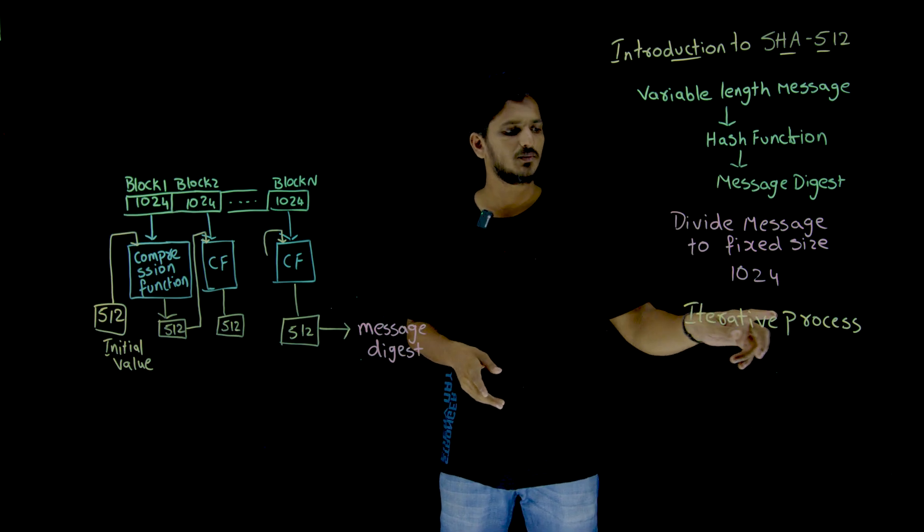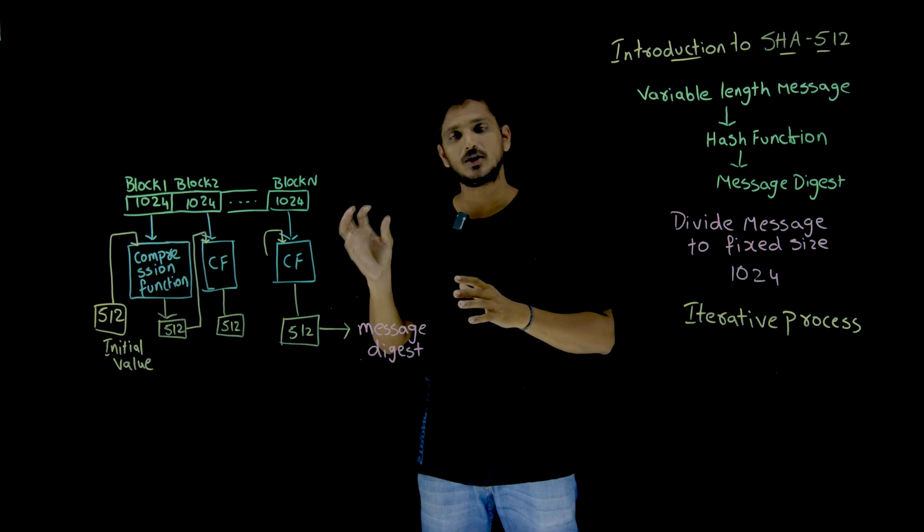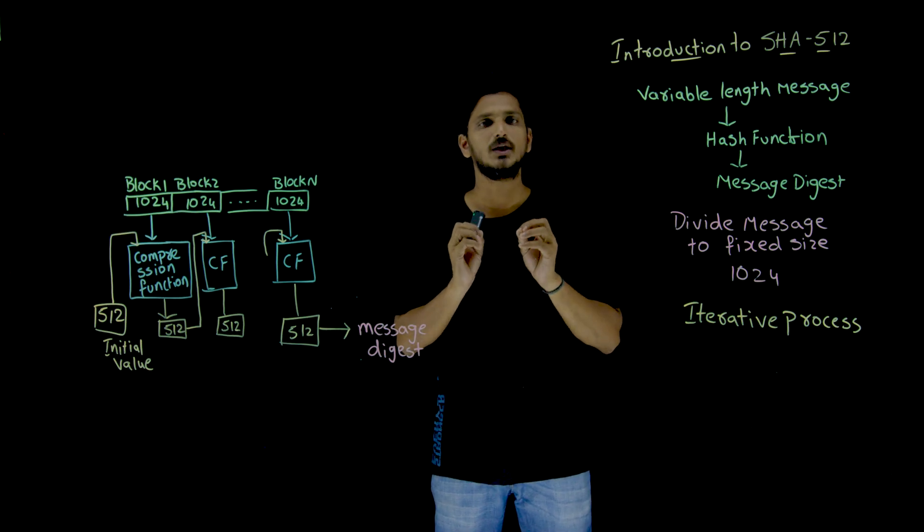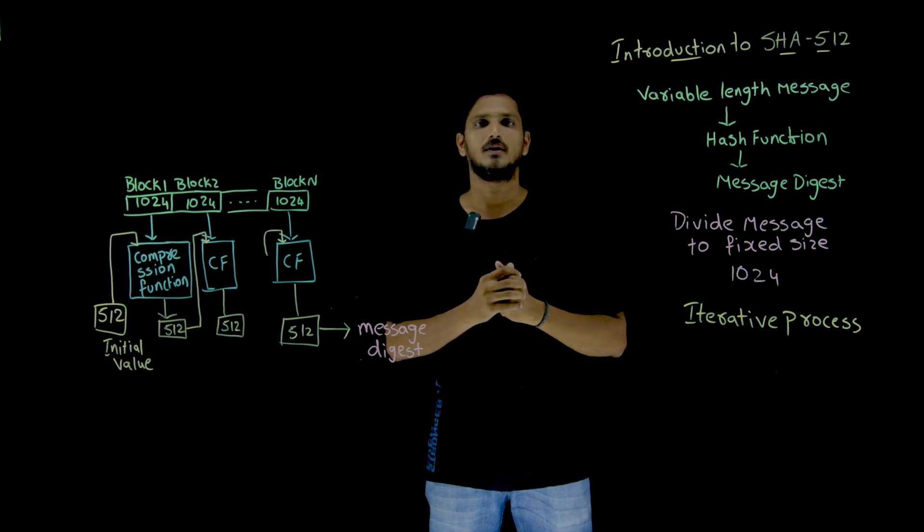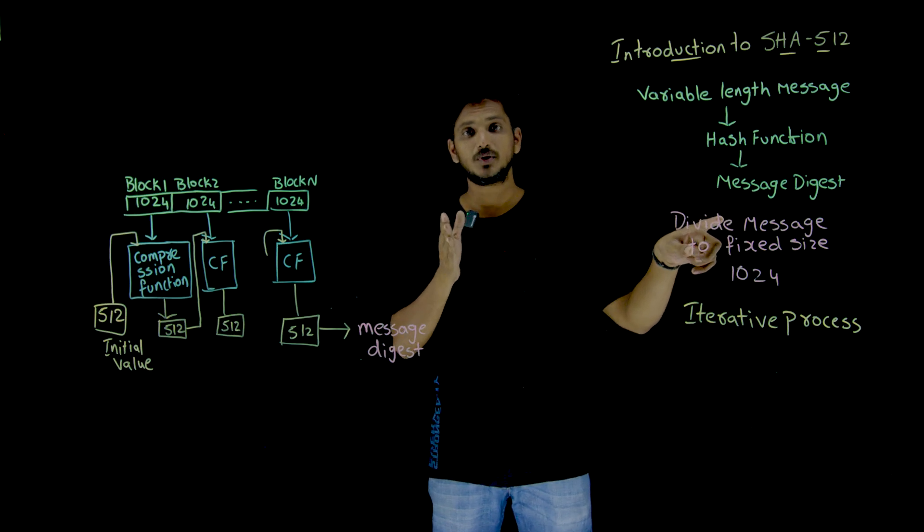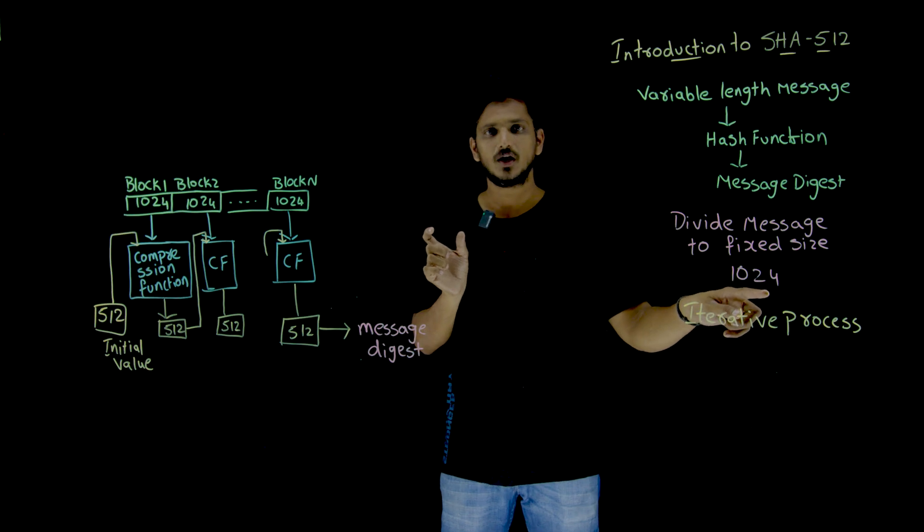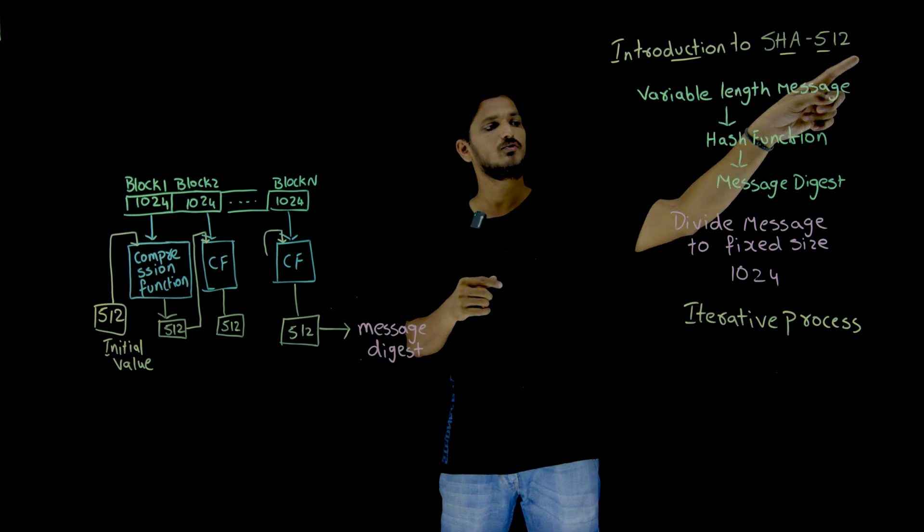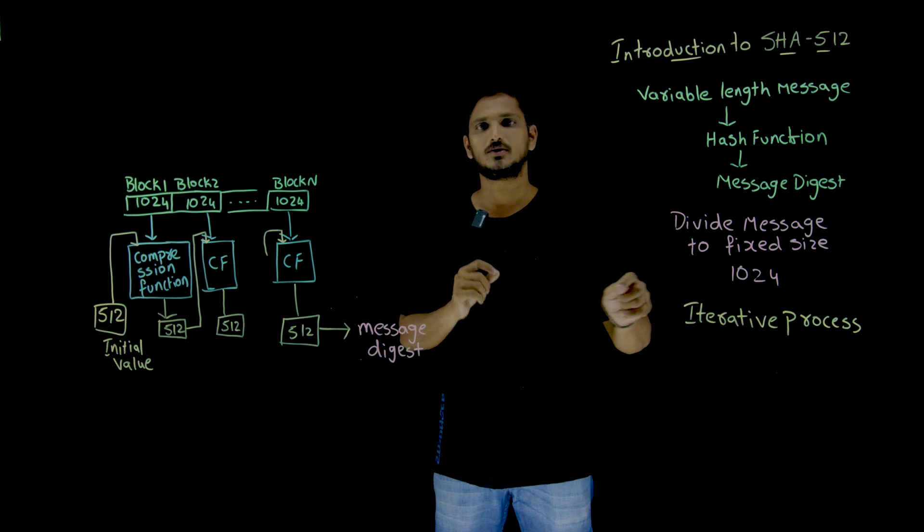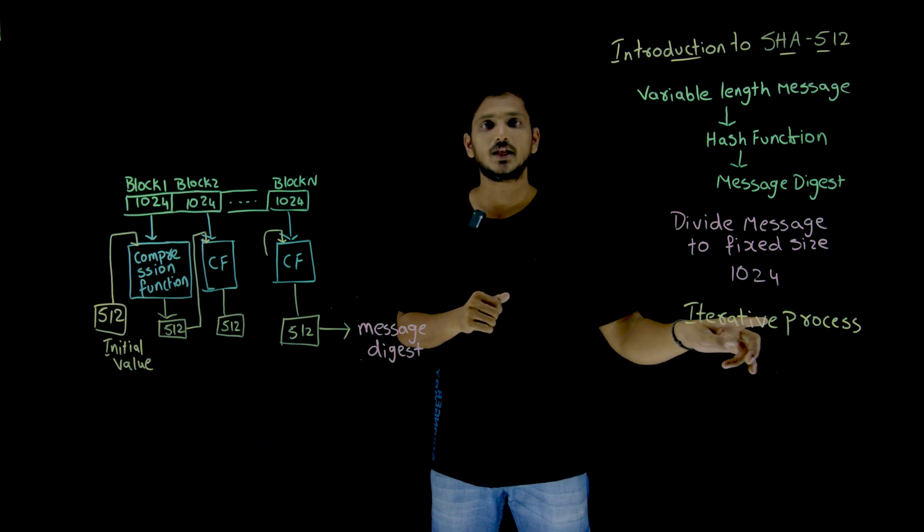So what is meant by iterative process? How it will be? We will have an overview of the iterative process in this class, and coming classes we are going to go deep into the concept. So hope you understand why message should be divided into fixed size blocks of size 1024. Here in SHA-512, we are going to use 1024 size bit blocks. And we are going to do iterative process.